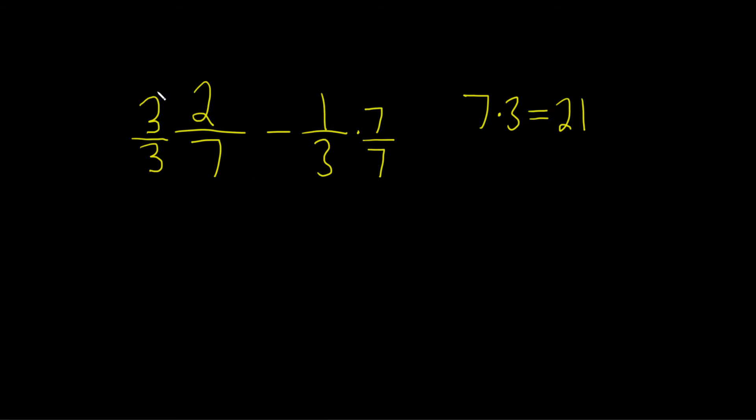Now let's go ahead and multiply. 3 times 2 is 6. And then 3 times 7 is 21. Minus 1 times 7 is 7. 3 times 7 is 21.